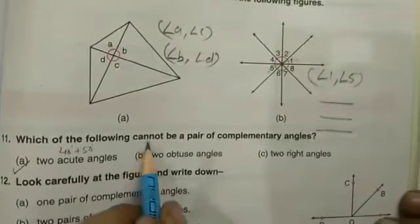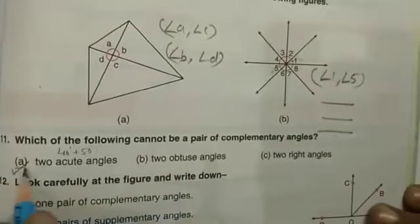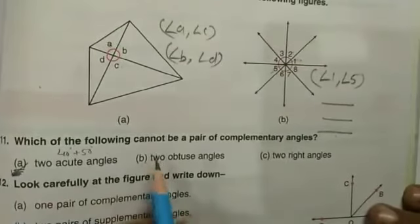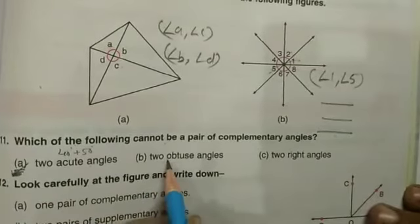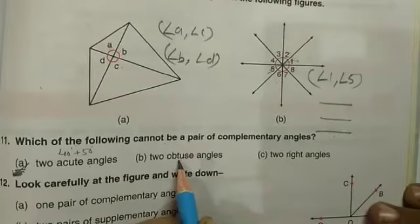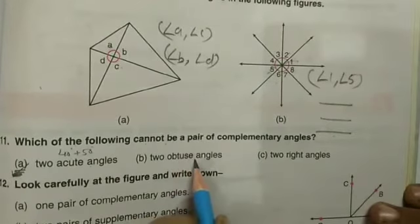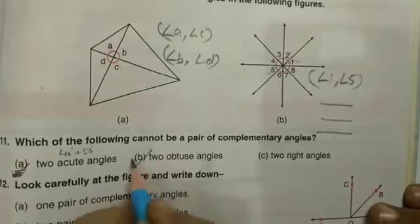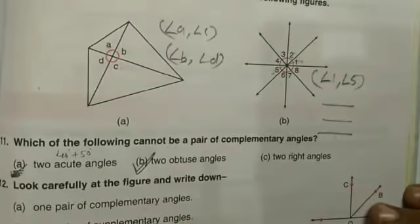Question is, which of these cannot? So we should not put a tick here. Next, two obtuse angles. If one angle is more than 90, how could the sum of two angles be equal to 90? So this cannot be a pair of complementary angles.